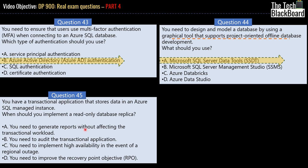Should you do it when you need to generate reports without affecting the transactional workload, or when you need to audit the transaction application, or when you need to implement high availability in the event of regional outage, or when you need to improve recovery point objective? Recovery point objective is definitely not related to implementing a read-only database replica. RPO and RTO are more related to recovery of the database. High availability and audit are also out of question. The obvious choice is that you need to generate reports without affecting transactional load. So this is the correct answer.